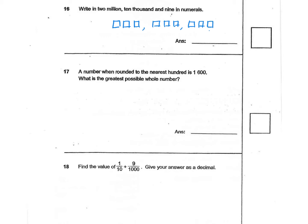Here is my ones, here is my thousands, and here is my millions. I draw this box to help me fill up the numbers. Because we have 2 million, then we have 10,000, and then we have 9. So we fill the numbers, and the remaining boxes we just fill with zeros.